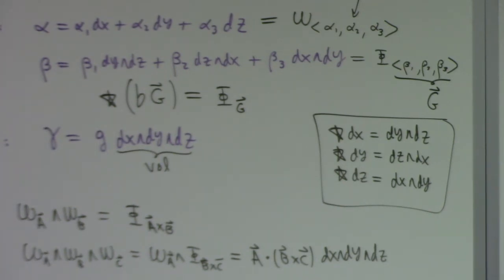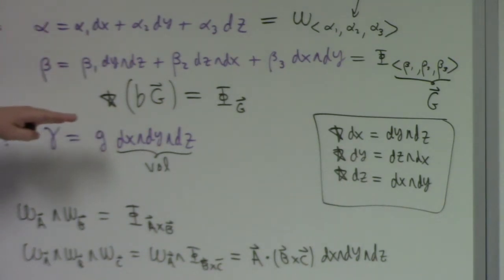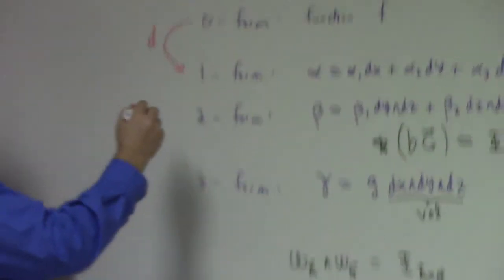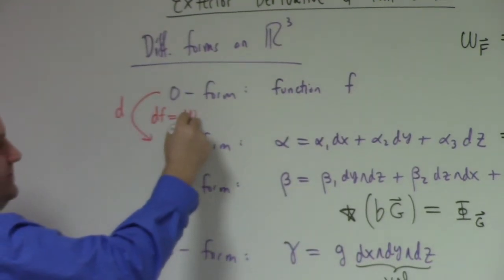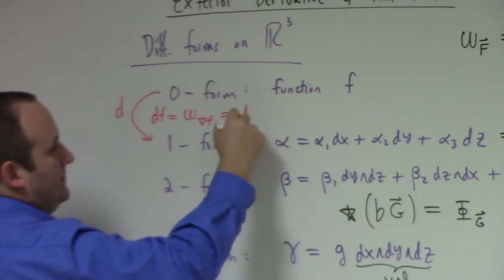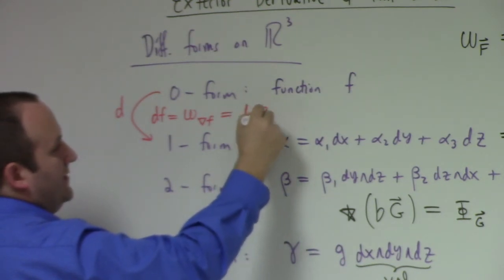Let's get back to exterior differentiation. What is the significance of the exterior derivative going from zero-forms to one-forms? Well, df is the work form of the gradient of f. In other words, df is the flat of the gradient of f — if you lower the index on the gradient, you get the differential.